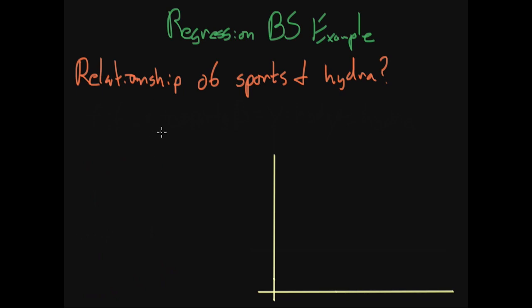If we want to phrase this as a regression problem, we could use the following regression equation: we have an intercept term alpha plus sports (the number of hours you play sports a day) times beta (the relationship between number of hours you play sports a day and hydration), equals hydration, or equals y.